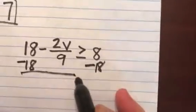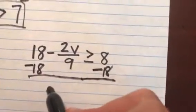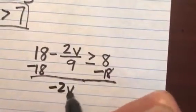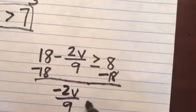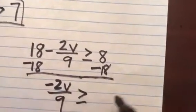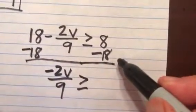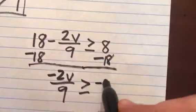When I do that, on the left hand side, I have negative 2v over 9 is greater than or equal to, then 8 minus 18 is negative 10.